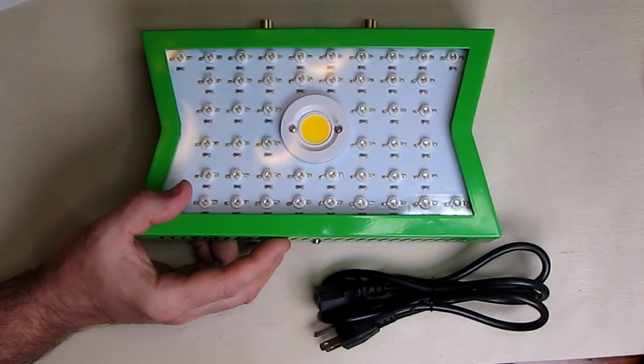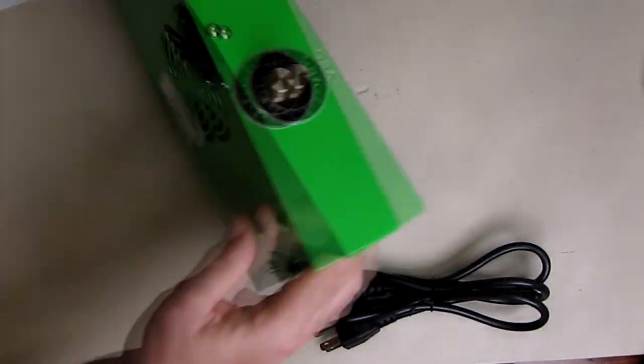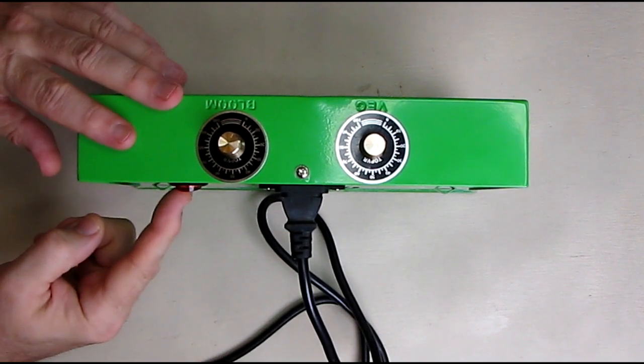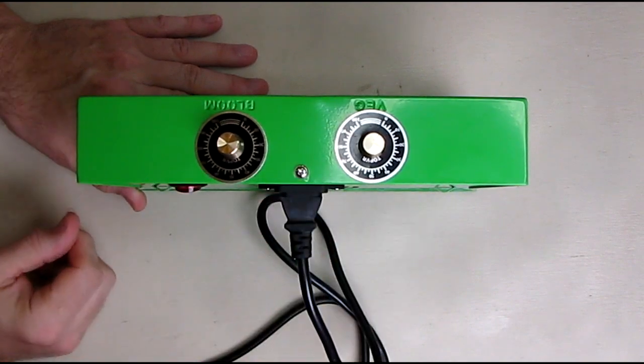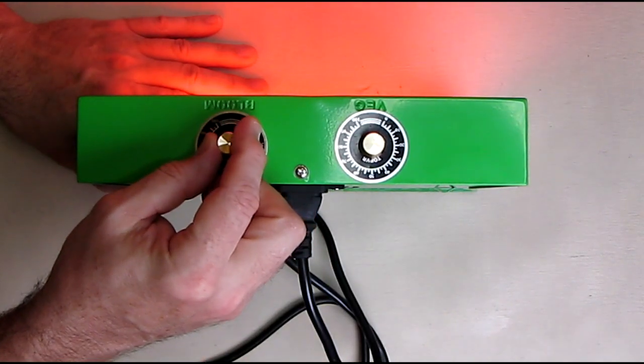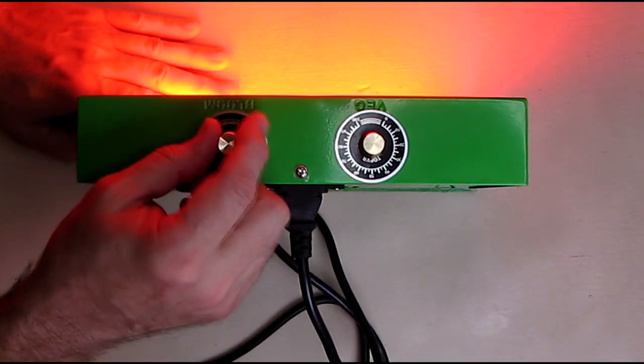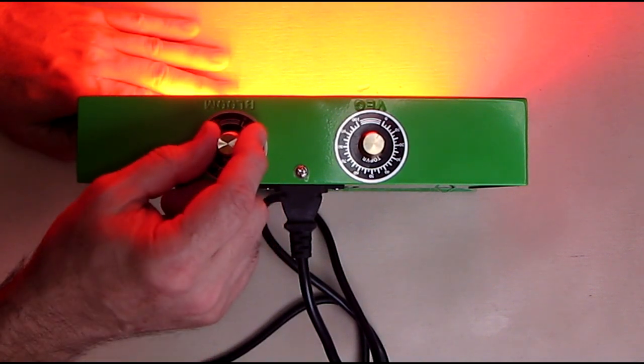So we're going to power this up and show you the controls on here. Okay, so I have the plug powered on and I have the switch turned on and both these controls are counterclockwise. So if I turn the bloom, it starts to produce color and you have control of the amount. You notice the fan starts increasing.